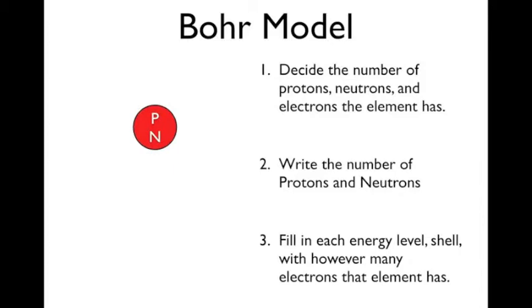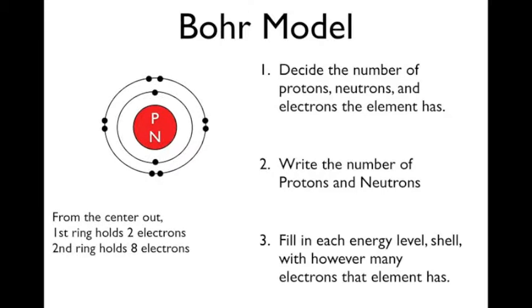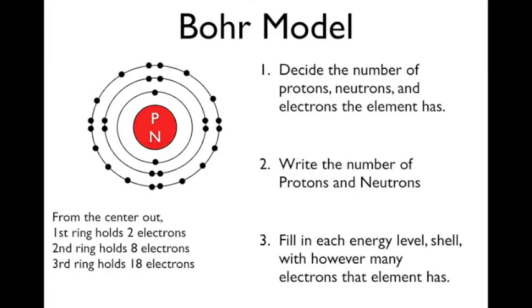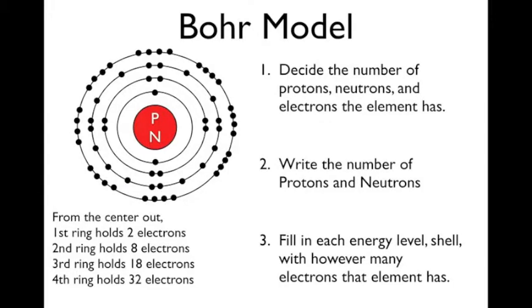So the Bohr model. First thing when drawing out a Bohr model is you need to decide the number of protons, neutrons, and electrons that element has. Then you write the number of protons and neutrons in the center of that little circle, and then you fill in each energy level or shell with however many electrons that element has. From the center out, the first ring holds two electrons, second can hold eight, third can hold 18 electrons, and the fourth can hold 32 electrons.